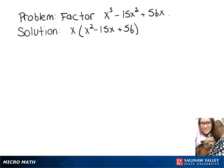Now we're going to factor the part inside the parentheses. Since the leading coefficient is 1, we can think of two numbers that multiply to give 56.